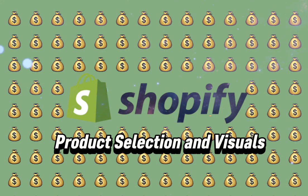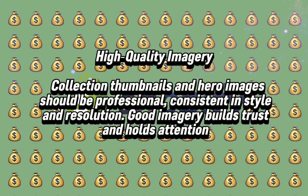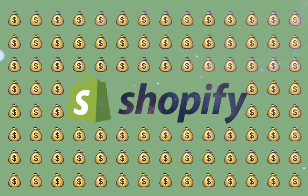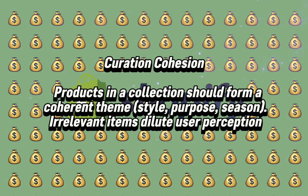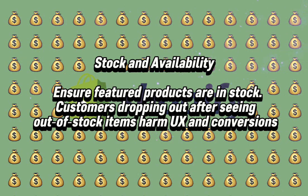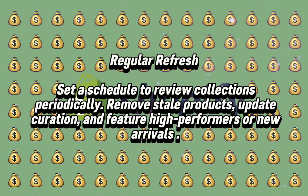Product Selection and Visuals. High-quality imagery: collection thumbnails and hero images should be professional and consistent in style and resolution — good imagery builds trust and holds attention. Curation cohesion: products in a collection should form a coherent theme by style, purpose, and season, as irrelevant items dilute user perception. Ensure featured products are in stock; customers dropping out after seeing out-of-stock items harm UX and conversions. Set a schedule to review collections periodically, removing stale products, updating curation, and featuring high performers or new arrivals.